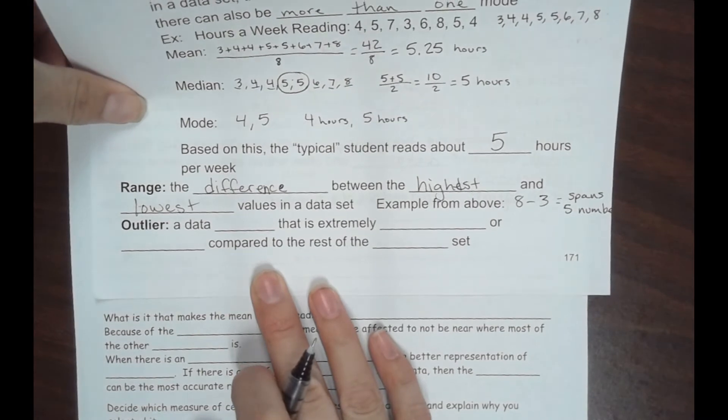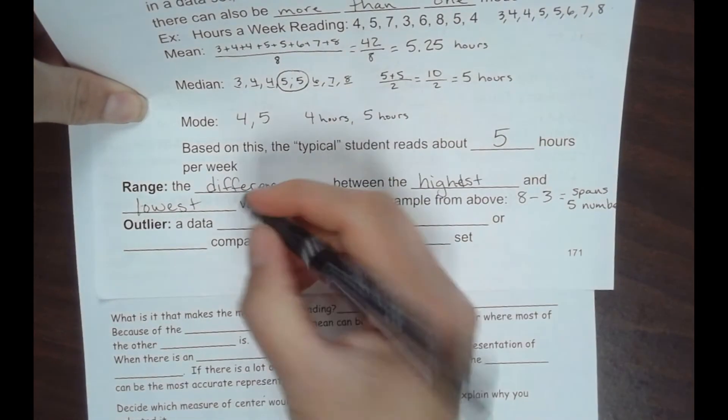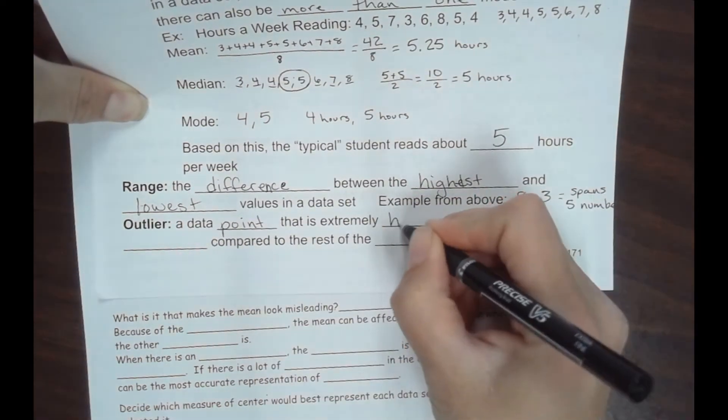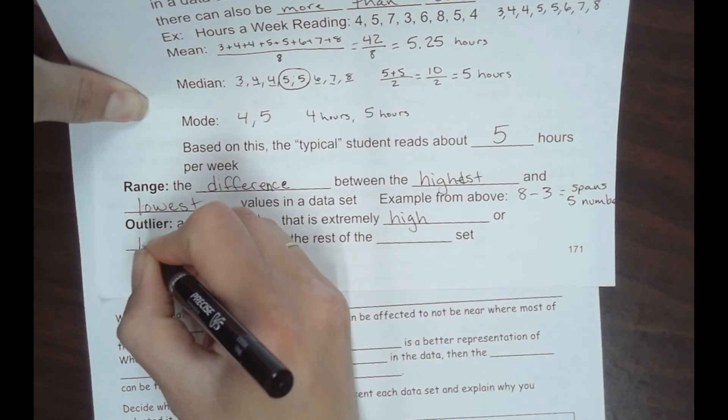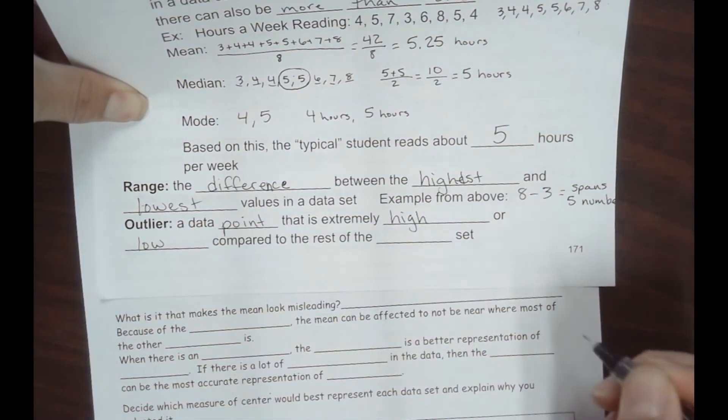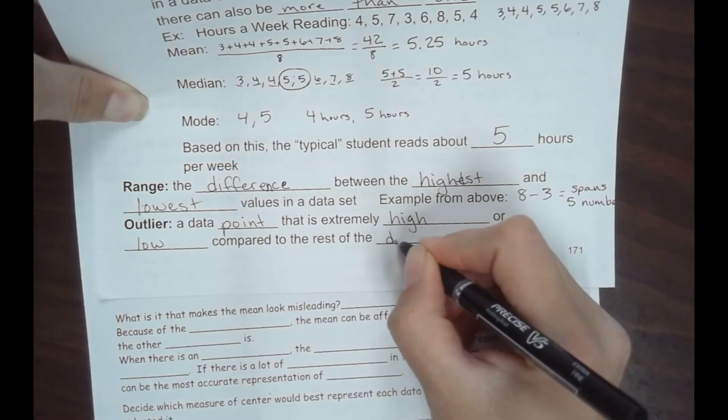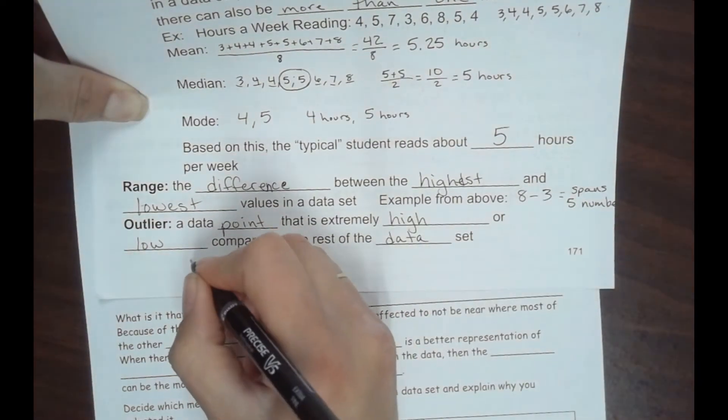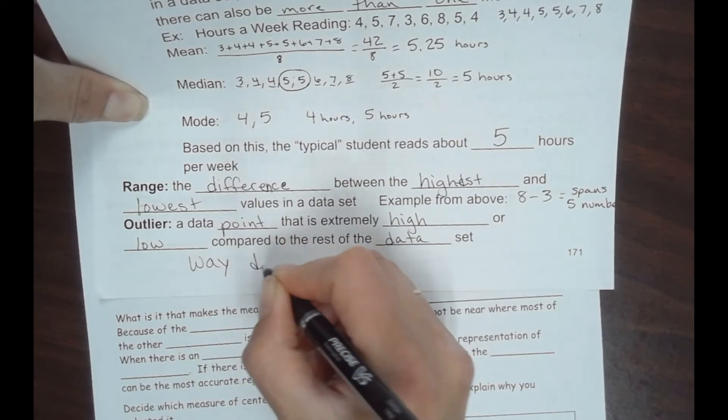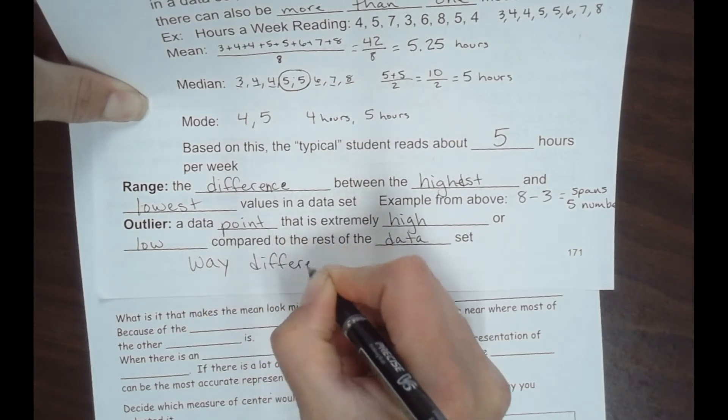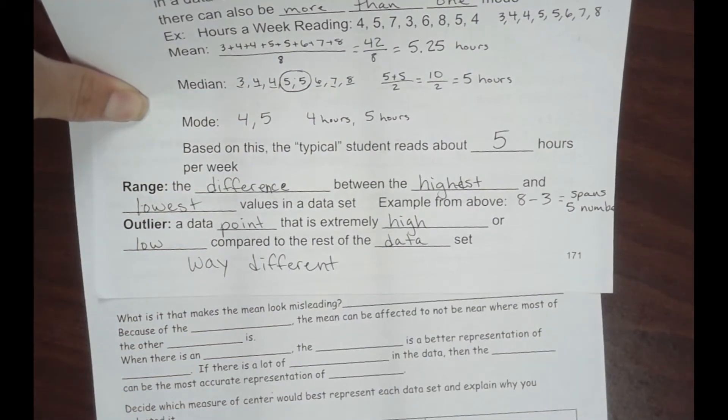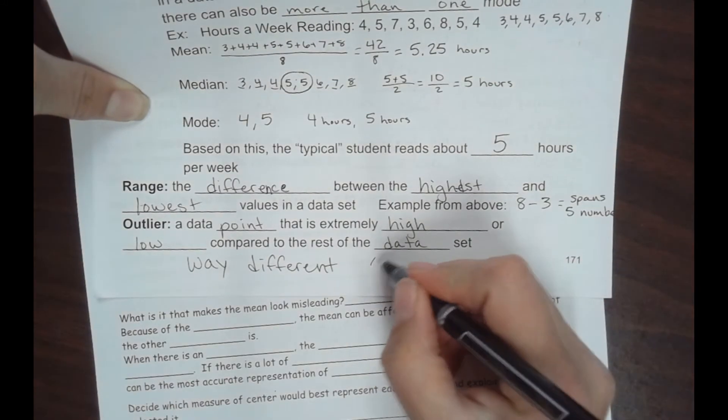An outlier is a data point that is extremely high or low compared to the rest of the data set. So it's way different from the rest, either way higher or way lower, but it's kind of an oddball out there compared to everybody else.